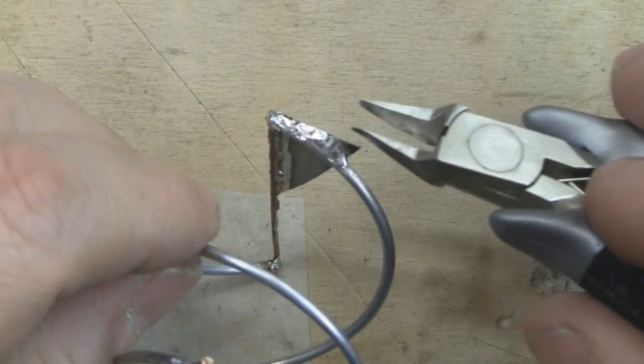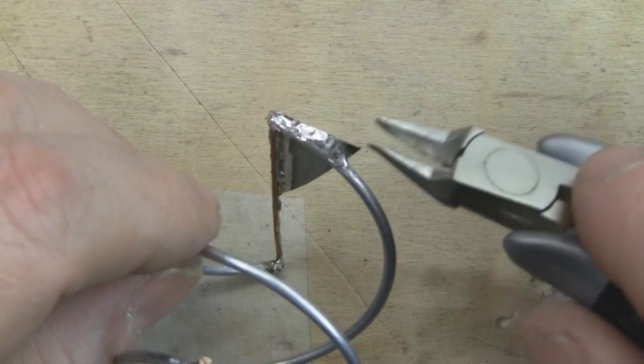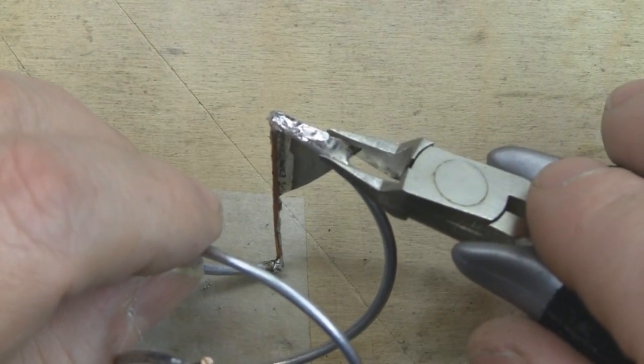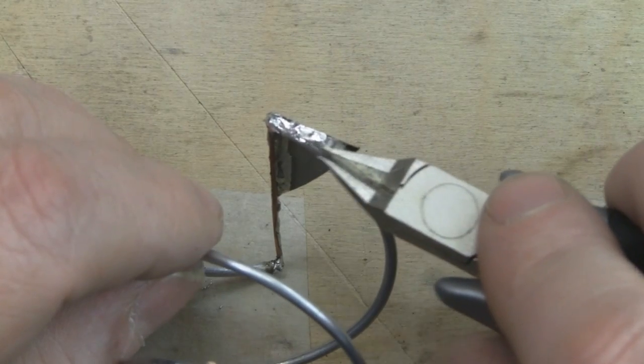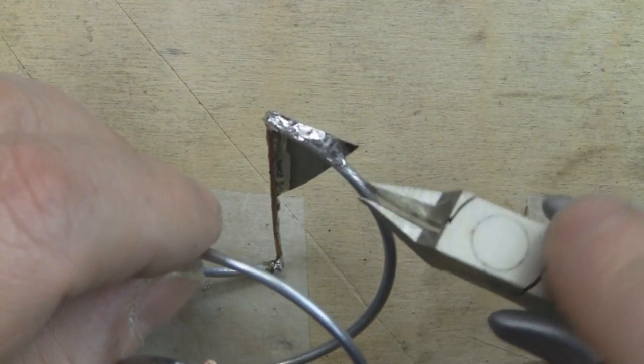I've got the side soldered on now. I'll use side cutters to trim away the excess, then use a Dremel tool with a sanding drum to blend it into the curve of that coil.